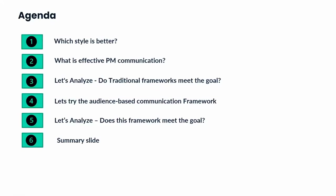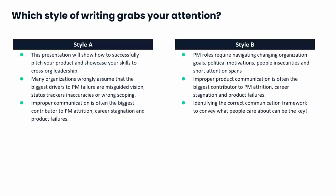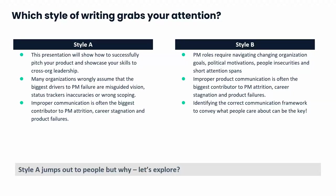Before we dive into this, let's look at two samples together. You see two styles — style A and style B — listed here. Let's take a few seconds to read through them and discuss which style jumps out to us. When asked, most people find style A jumping out to them. But why is that? Let's explore.